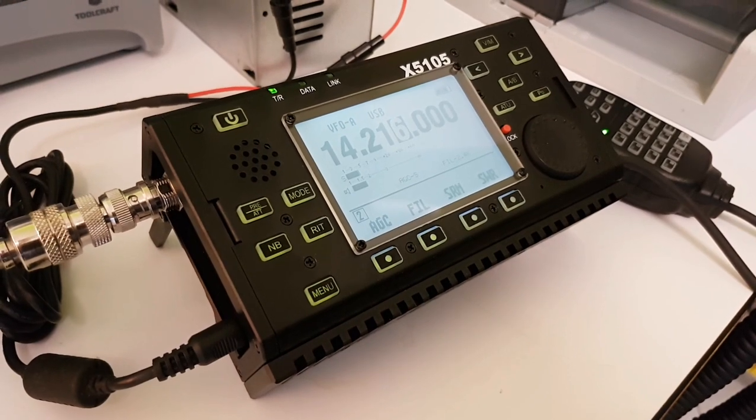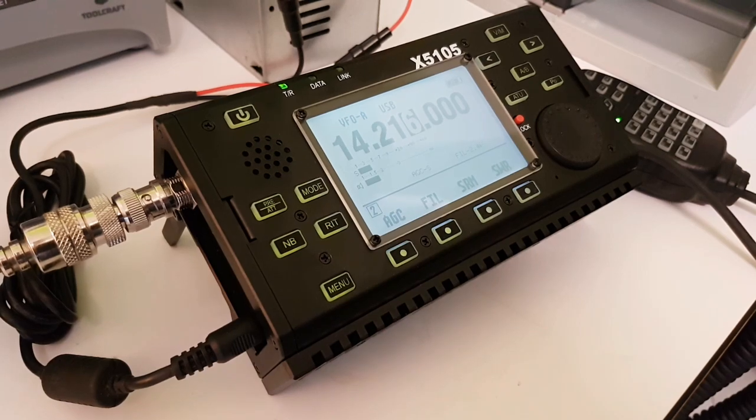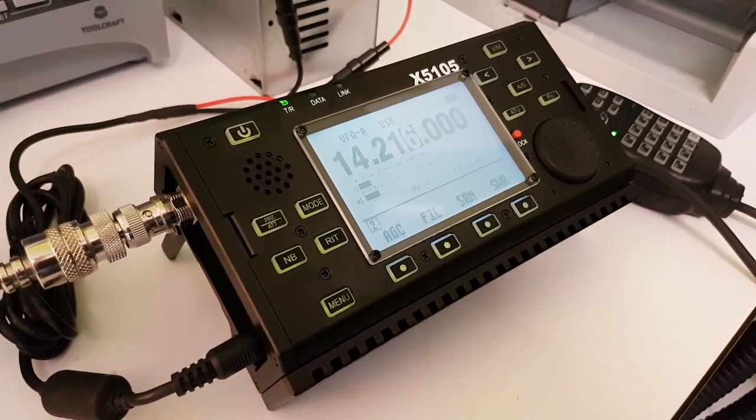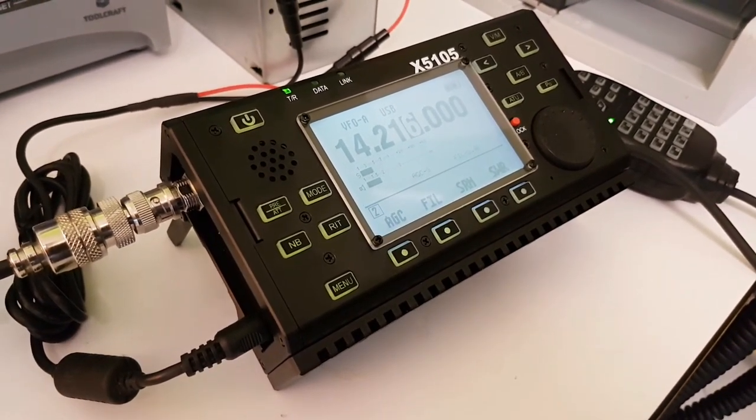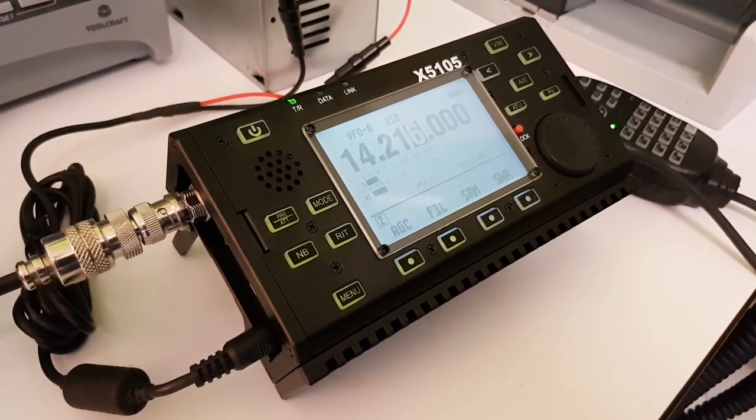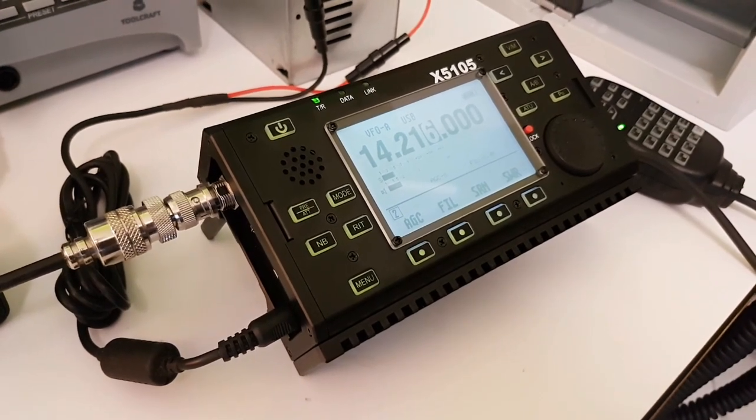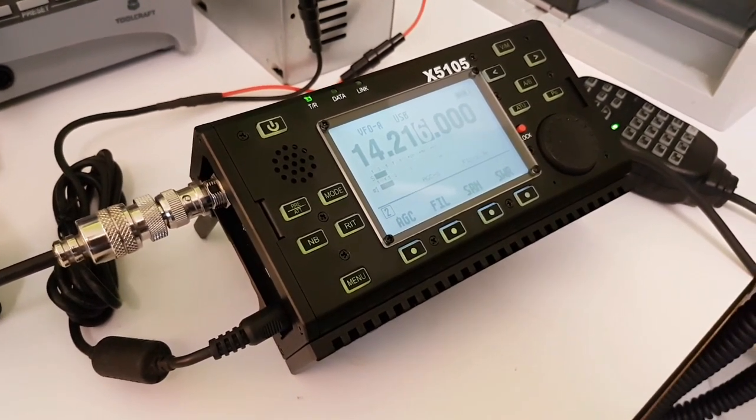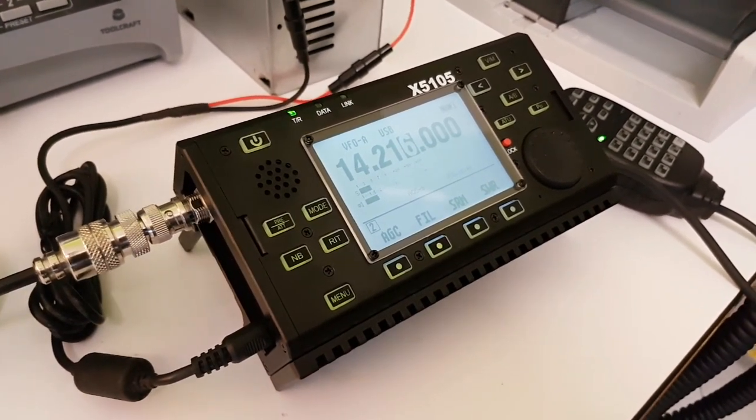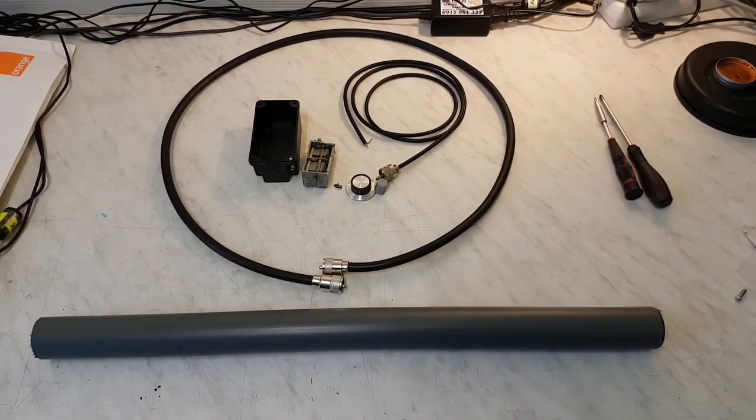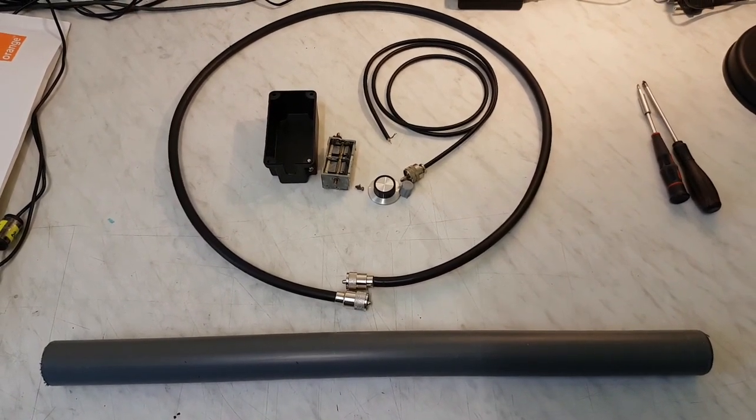Hi guys, Oscar Mike Zero Echo Tango again. Right now I've got this beautiful transceiver Xiegu X5105, and I need to test this transceiver with some kind of QRP antenna. My next homemade project will be a homebrew small magnetic loop antenna. Okay, so here you can see the parts what I want to use to build this small magnetic loop.